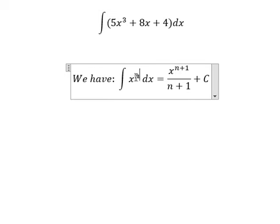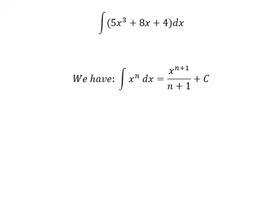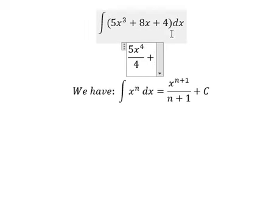put number 3 for n, and then we have 3 plus 1, we have number 4. So that means we have 5x to the power of 4 over 4. The next one,